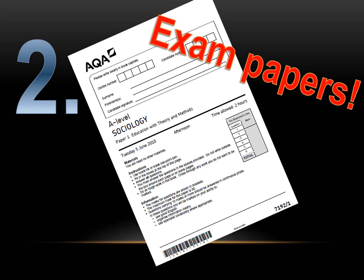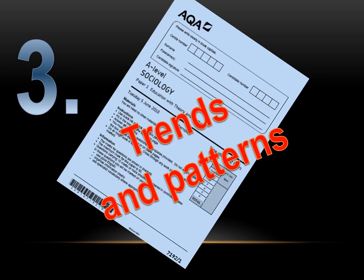Top tip number two: make sure you know the exam paper — the layout, the questions, how many there are, how many marks are available, how long to spend on each one, what the wording is, which ones have items and which ones don't, which ten-marker you can evaluate on and which one you can't. Know it inside and out. The link below is to AQA so you can print off some past exam papers, check out some trends and patterns, and review the past exam papers.